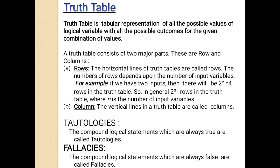The number of rows in a truth table depends upon the number of input variables. For example, if we have two input variables x and y, then there will be 2 to the power 2, that is 2 squared, which equals 4 rows in the truth table. In general, 2 to the power n rows are there in the truth table, where n is the number of input variables. The second part is columns — the vertical lines of the truth table are known as columns.